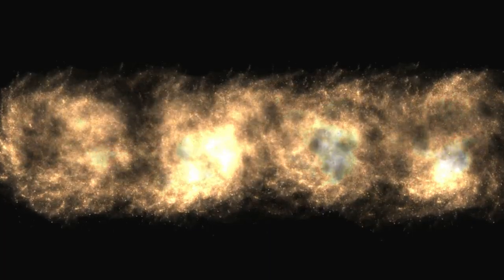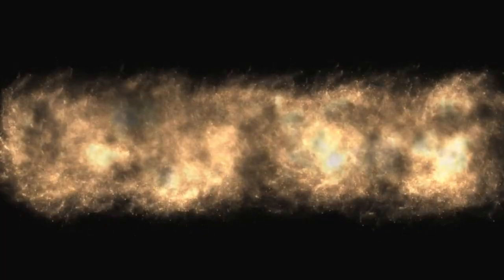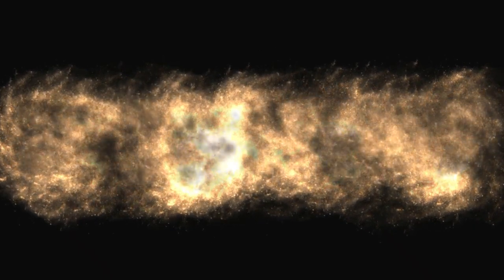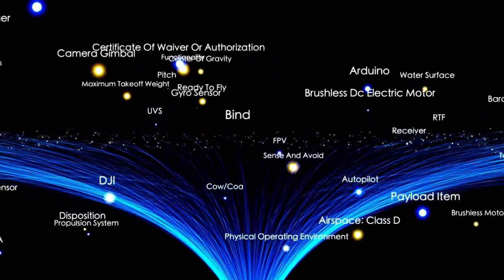Scientists estimate that the diameter of the observable universe is about 93 billion light years. That may seem surprising when compared to the estimated age of the universe, which is around 13.8 billion years.